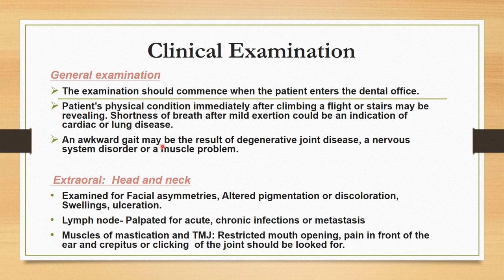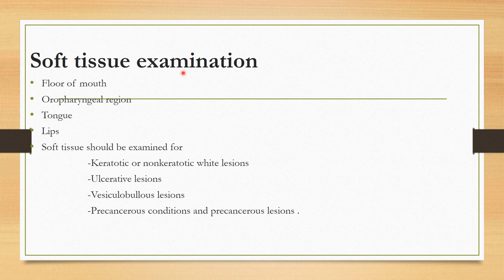Clinical examination is divided into general examination and extraoral examination, and intraoral examination which covers soft tissue and hard tissue. General examination commences when the patient enters the dental office: note physical condition, shortness of breath after mild exertion may indicate cardiac or lung disease, and an awkward gait may indicate degenerative joint disease or a neuromuscular problem. Extraorally, note facial asymmetries, pigmentation, lymph nodes, and TMJ. For soft tissue, examine the floor of the mouth, oropharyngeal region, tongue, and lips for lesions.